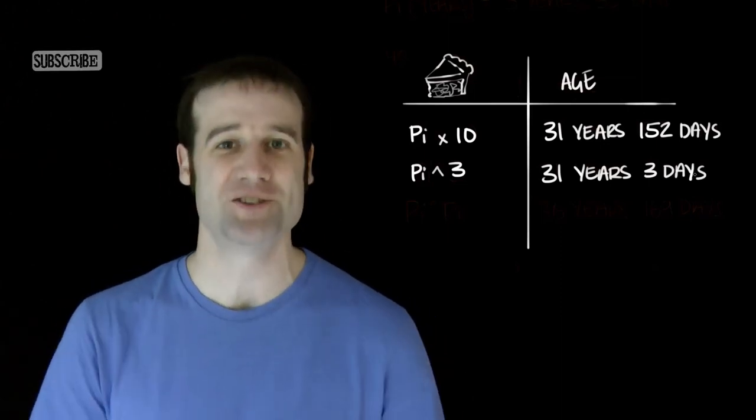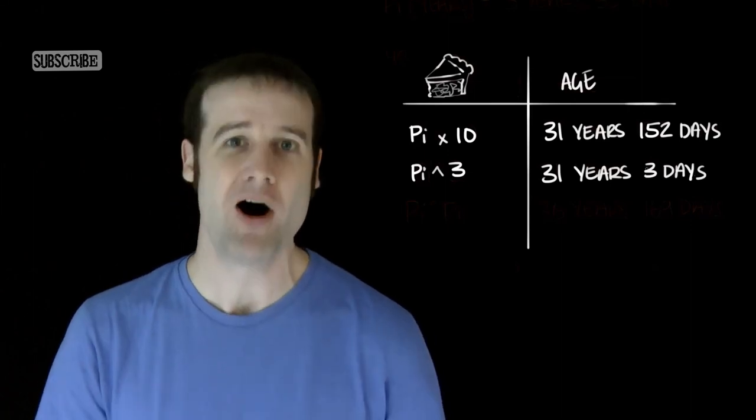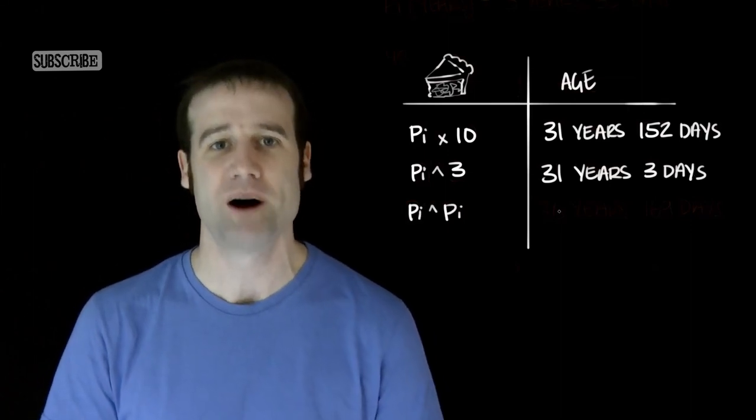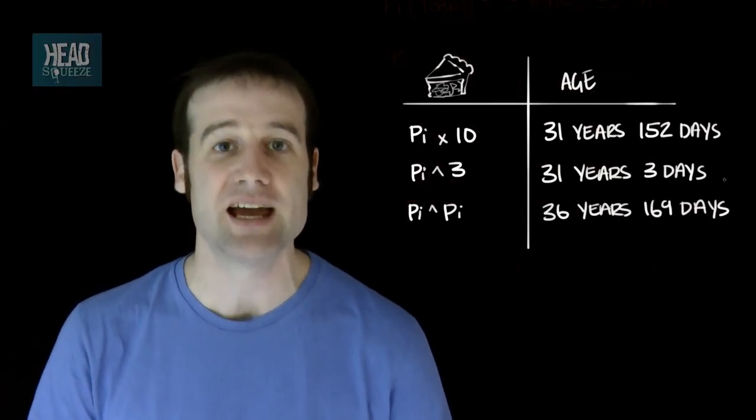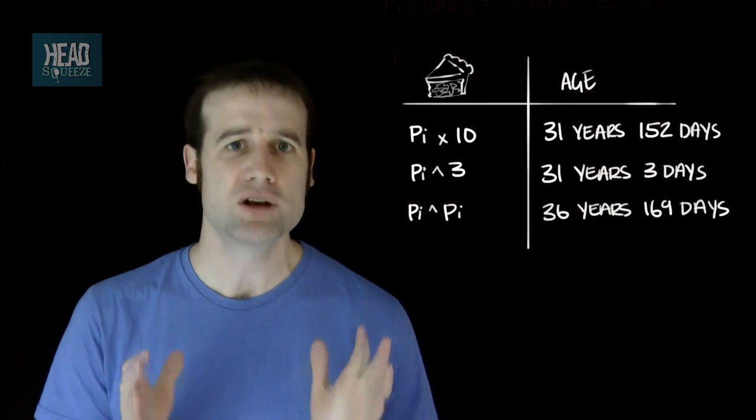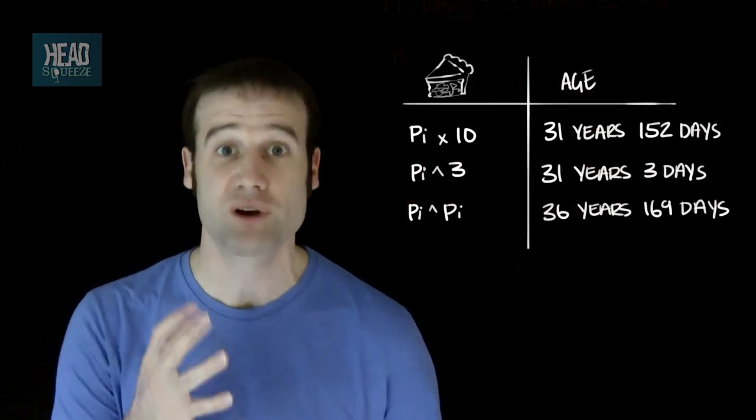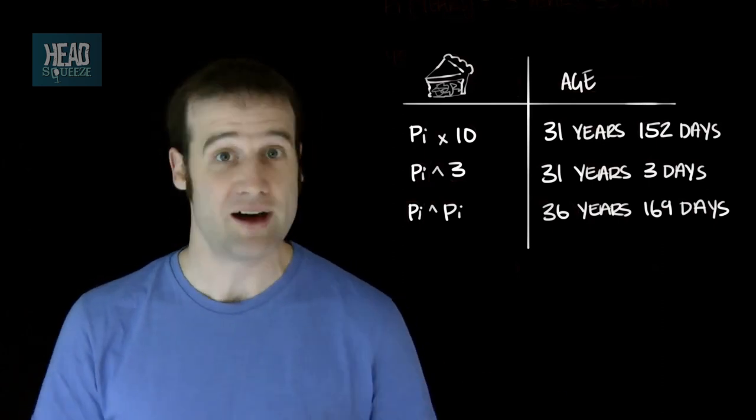And finally, the most irrational of all birthdays you're going to come across. Pi to the power of pi. Pi to the pi is 36 years, 169 days when measured in standard years. Which means you can have the most irrational birthday with the transcendental party that you will ever have.